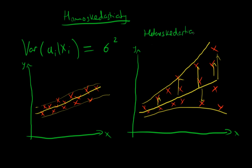So homo in this context means that the errors are the same—that's this case—and hetero here means that the errors are different.